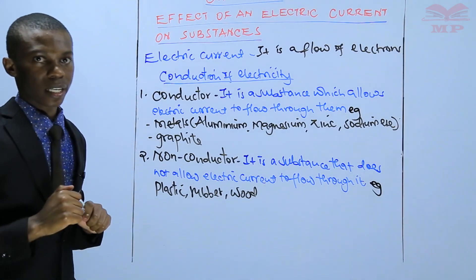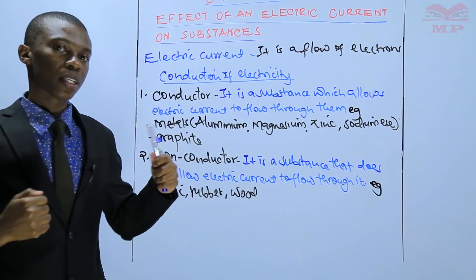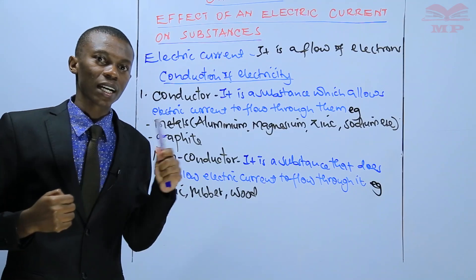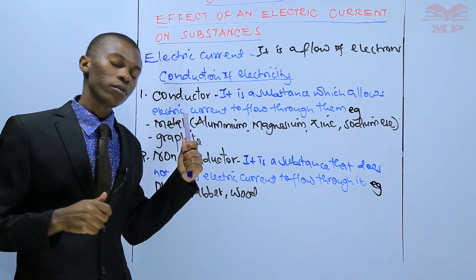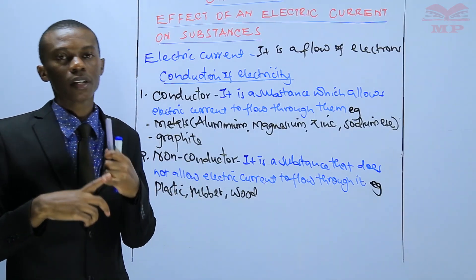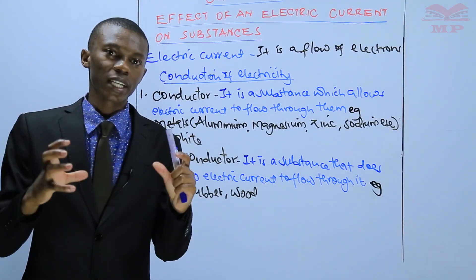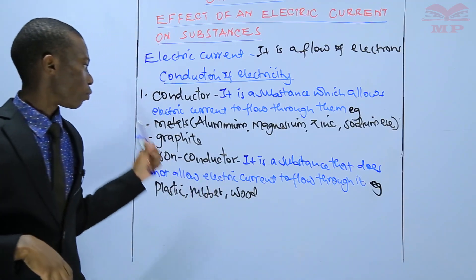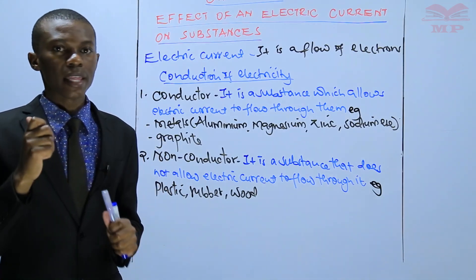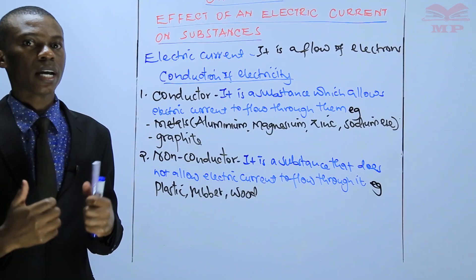I hope you now get the difference between a conductor and a non-conductor. A conductor is that substance that allows electric current to flow through it, while a non-conductor is that substance that does not allow electric current to flow through it. Examples of conductors are metals — including magnesium, aluminium, sodium, copper, and zinc — they are good conductors of electricity. Non-conductors include substances like plastic, wood, and rubber.